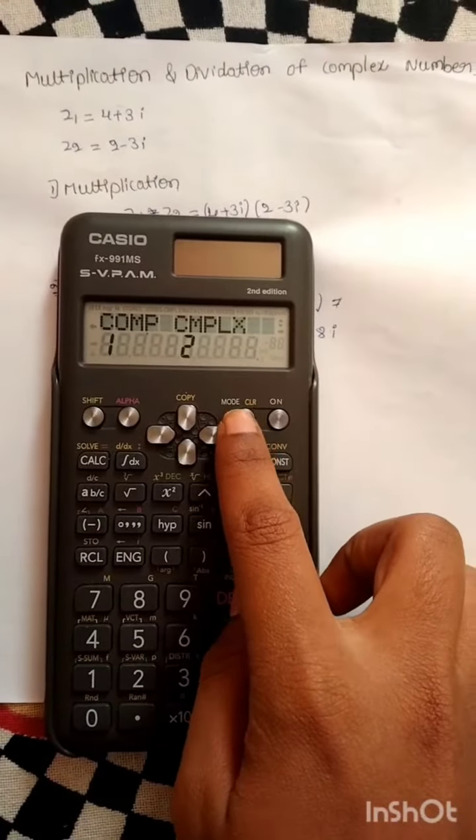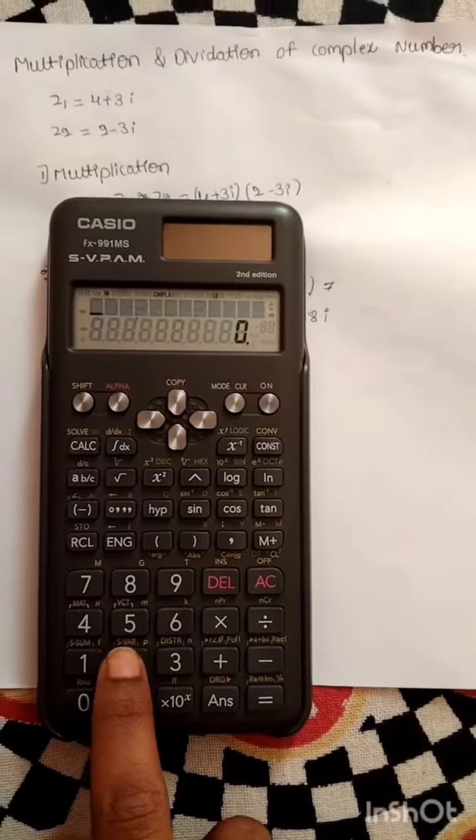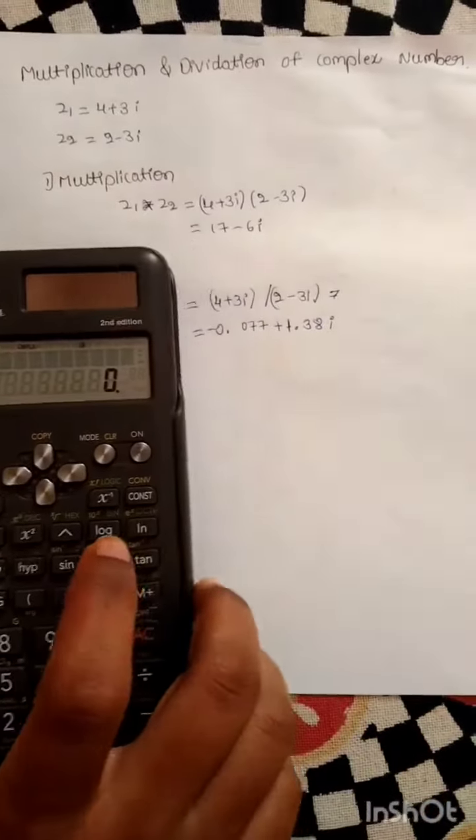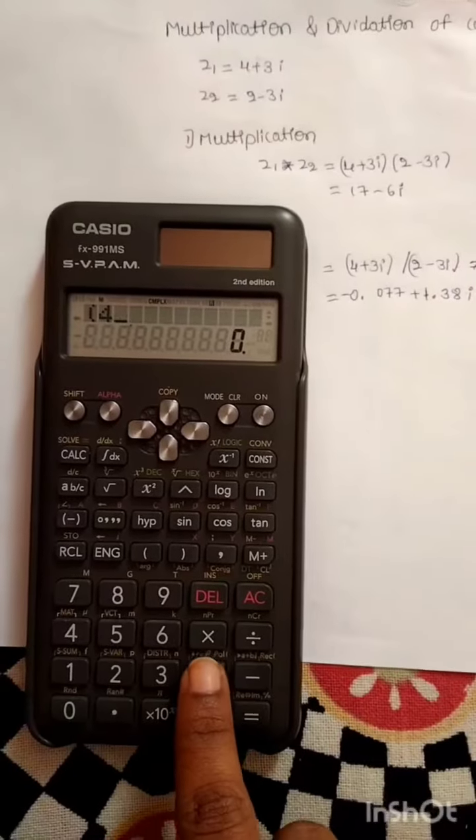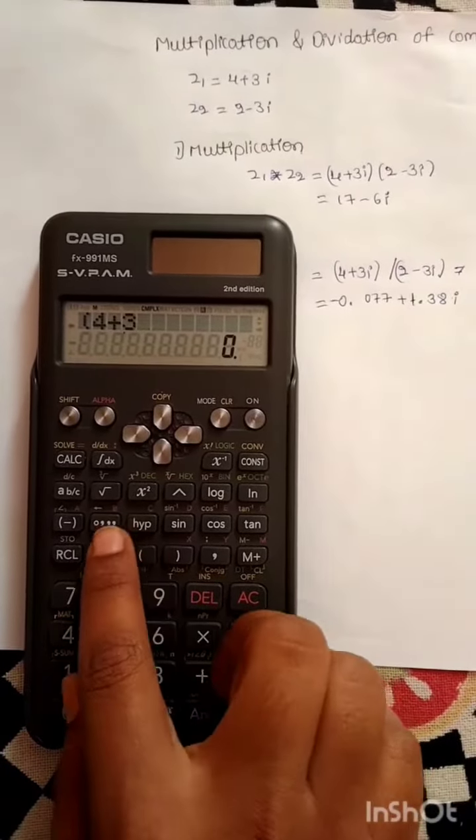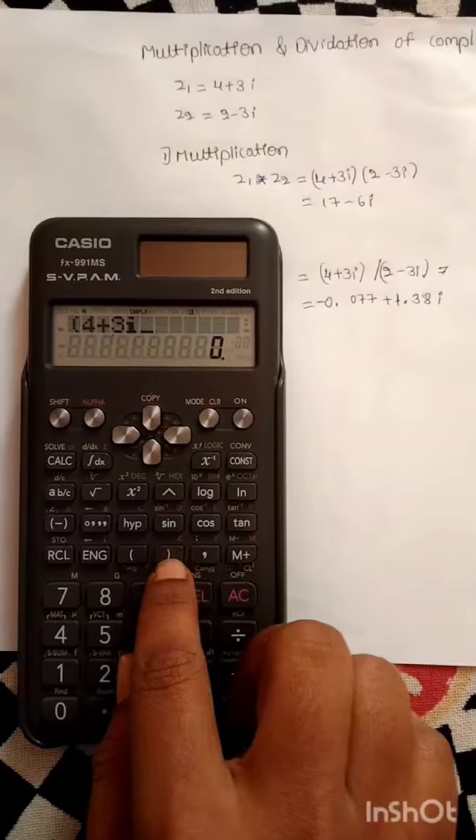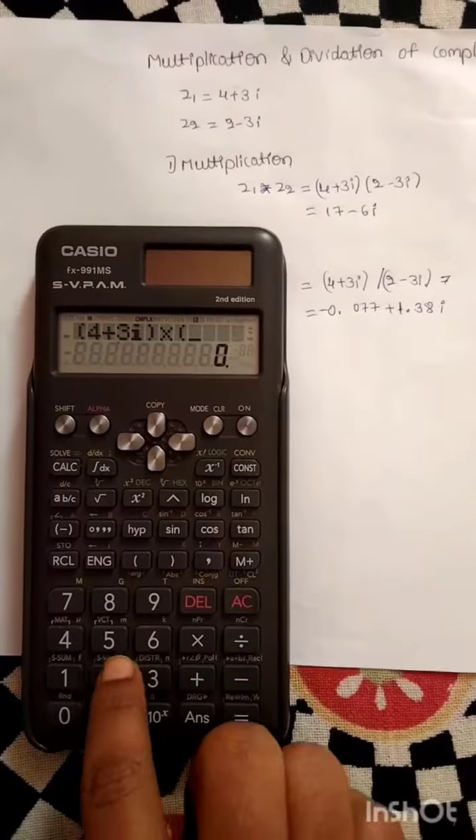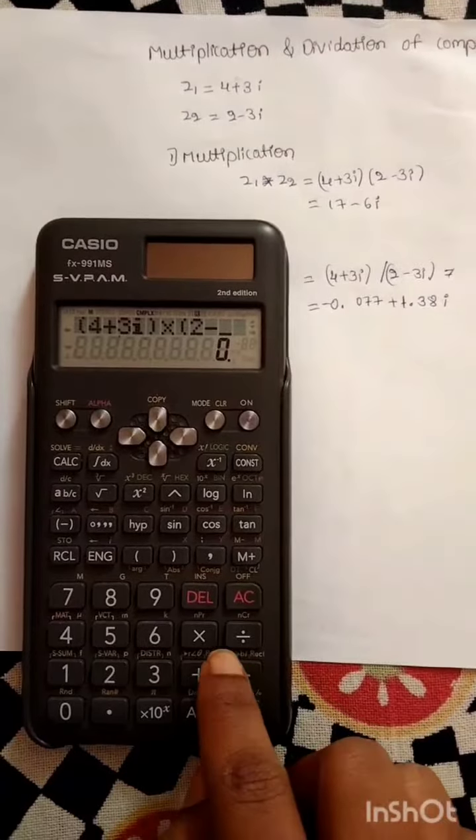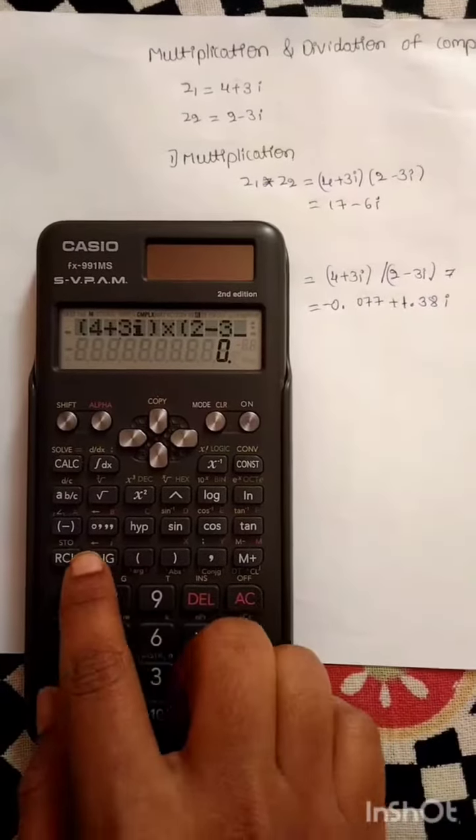Enter complex mode. Enter z1 and z2. z1 is 4 plus 3i into z2 is 2 minus 3i.